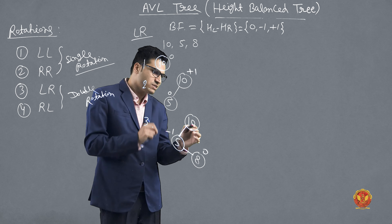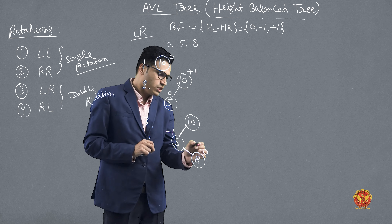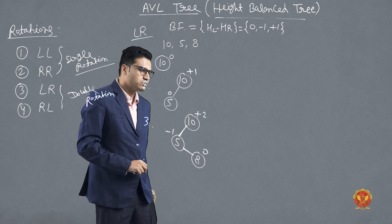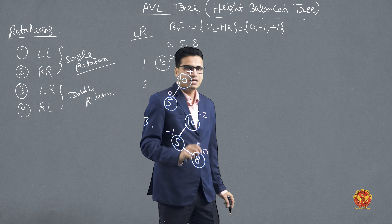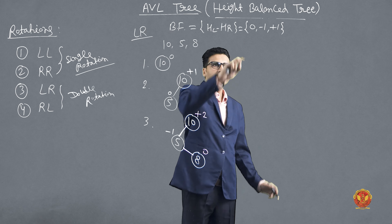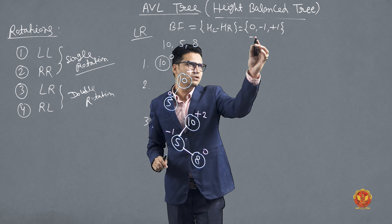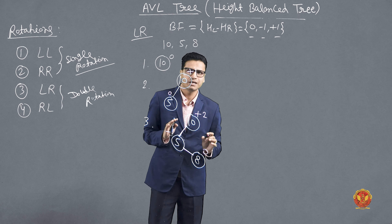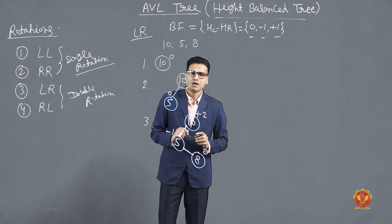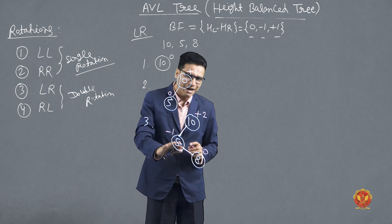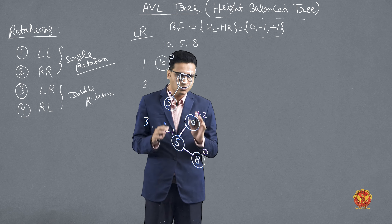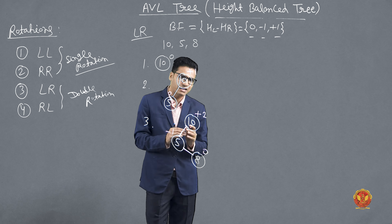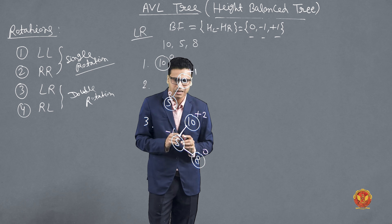Now checking the balance factor of node 10: height of left subtree is 2 minus height of right subtree is 0, which gives plus 2. This means the tree is unbalanced, because we said if the balance factor is 0, minus 1, or plus 1 the tree is balanced; otherwise unbalanced. So now we need to balance it.